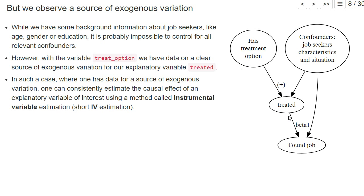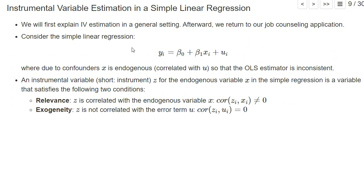In such a case, where one has data for a source of exogenous variation, one can indeed consistently estimate the causal effect of an explanatory variable of interest, here treated, on whether the job was found. This is beta 1 using a method called instrumental variable estimation, or short IV estimation. I first want to explain instrumental variable estimation in a general setting, and we will come back to our job counseling application later.